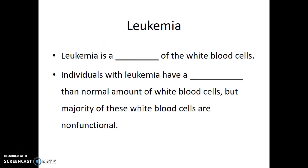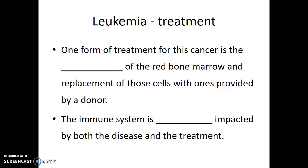The first immunodeficiency-related disease is leukemia, which is a cancer of the white blood cell. Individuals with leukemia will have a higher than normal amount of white blood cells, but the majority of these white blood cells will be non-functional. One form of treatment is the destruction of the red bone marrow, followed by replacement of those cells with ones provided by a donor. The immune system is negatively impacted by both the disease and the treatment, so individuals with leukemia being treated are often immunocompromised or immunodeficient.